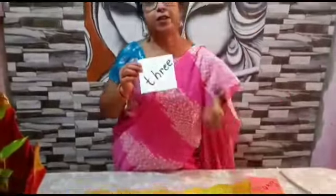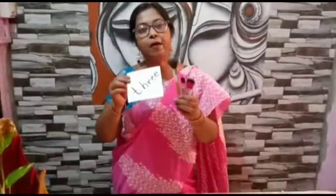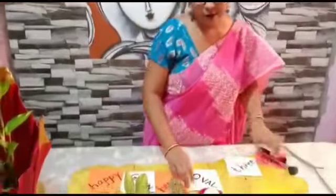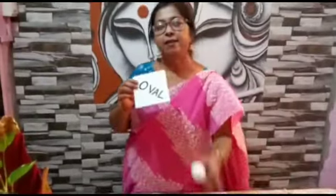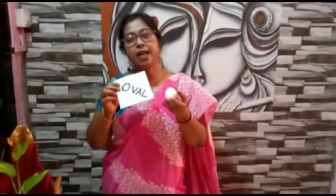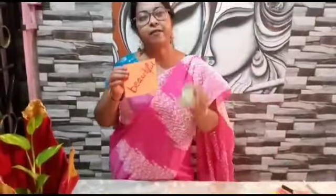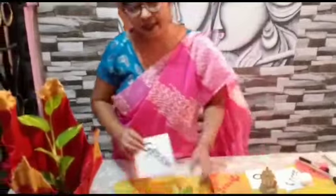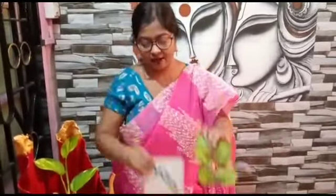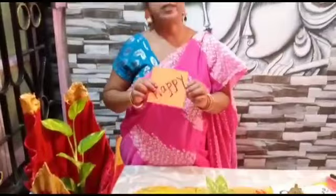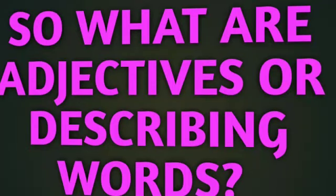Three is describing the number of brushes. Oval is telling the shape of the egg. Beautiful is describing the house. Green is describing the color of the leaf. And happy is describing the feeling of your teacher.